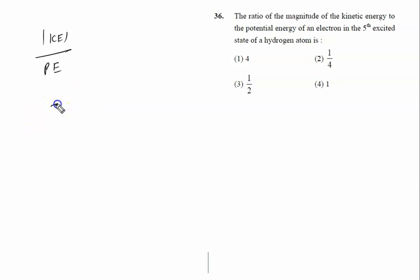We all know very well total energy in the nth orbit is given by minus 13.6 z squared upon n squared electron volt.